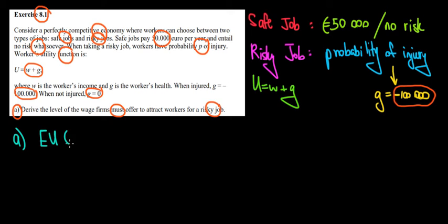The expected utility of a risky job must compensate the expected utility of a safe job. So it must be greater than or at least equal to the expected utility of a safe job. Now what would be the expected utility of a risky job? Let's calculate it right now.